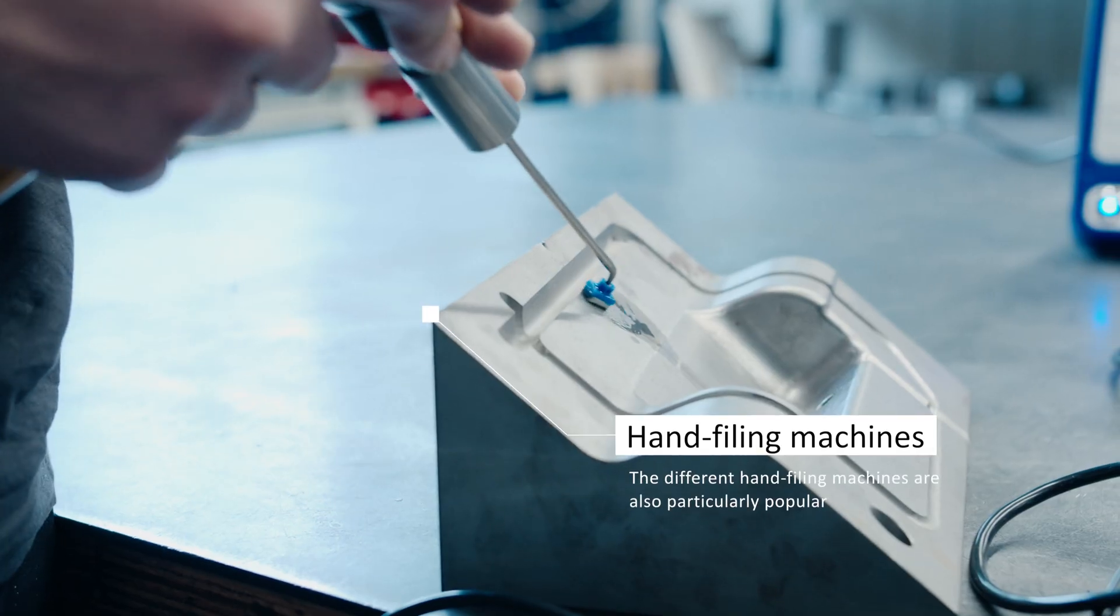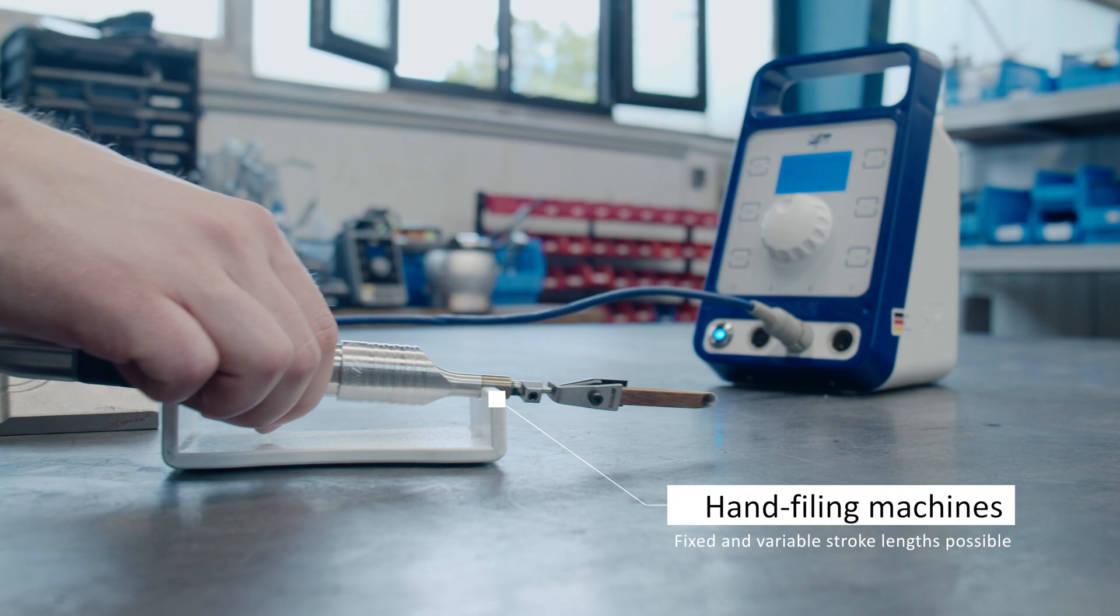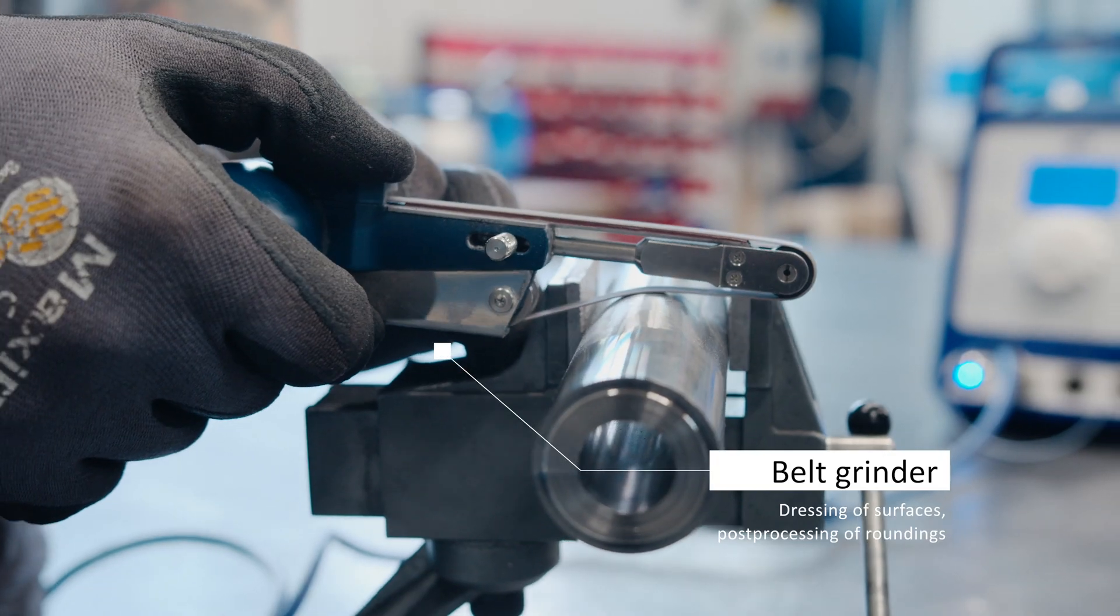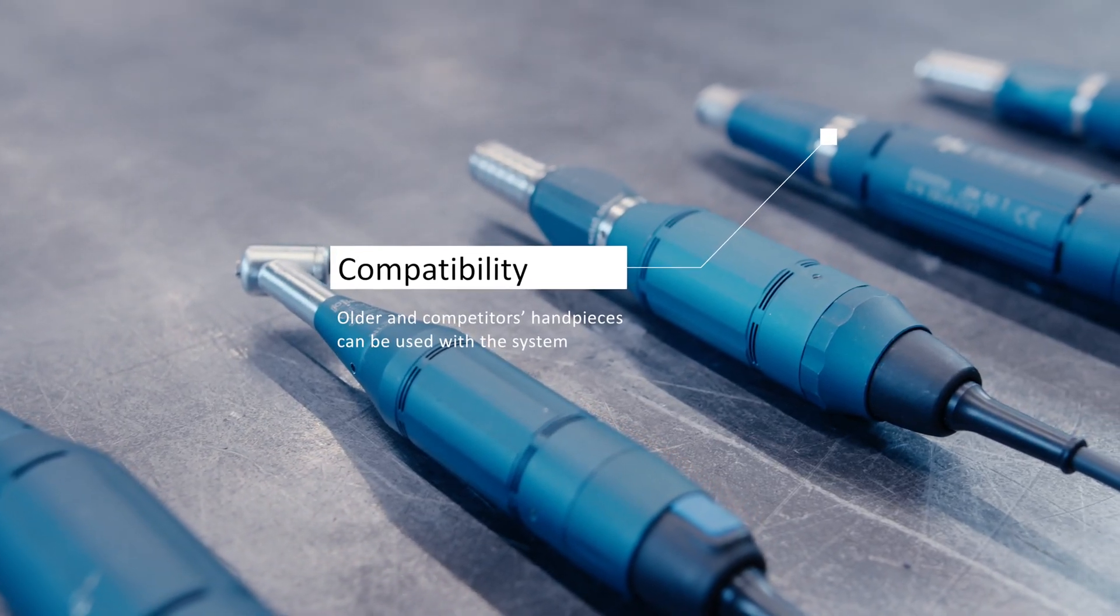Particularly popular, however, are also the different hand filing machines, in which the rotating movement is converted into a linear stroke. The optional belt grinder offers the possibility of dressing surfaces, but also of reworking roundings.